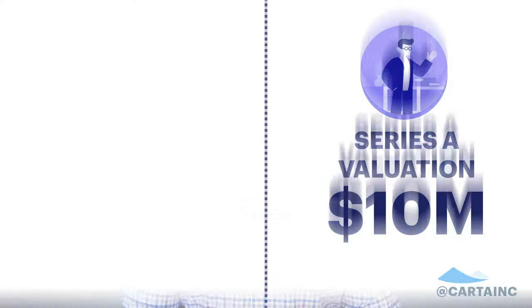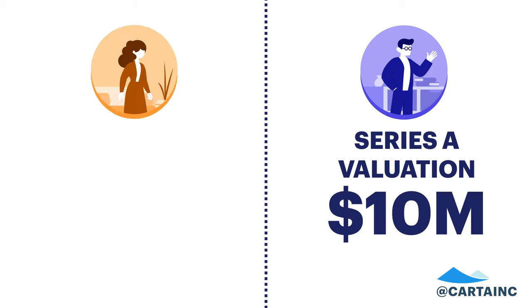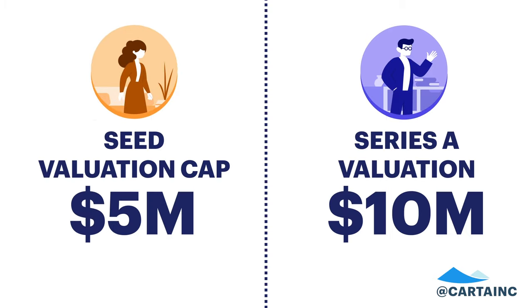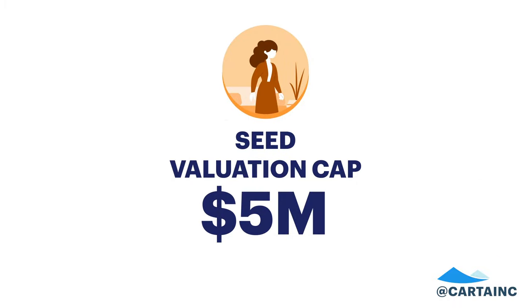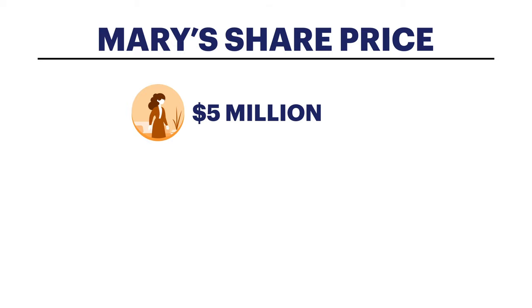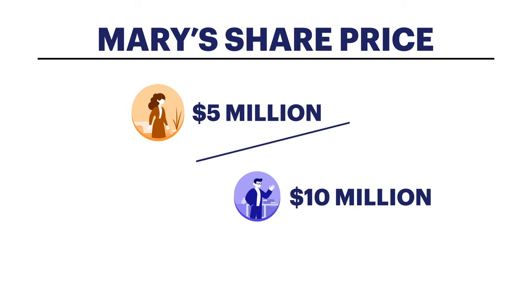It's now time to convert Mary's investment from a year ago into shares. This is where the valuation cap comes in. Remember, William valued your company at $10 million, but because Mary set a valuation cap of $5 million, you're actually going to give Mary her shares as if the company is valued at $5 million today. So what does that actually mean? Mary invested the same amount of money as William. To figure out Mary's share price, just take the valuation cap you set with her — $5 million — and divide it by the official valuation set with William in the Series A — $10 million. This gives you Mary's share price.